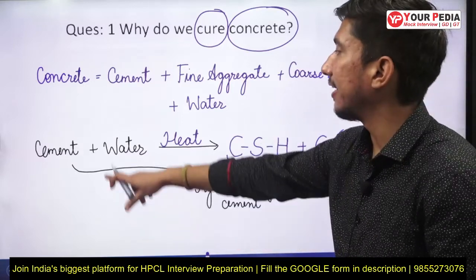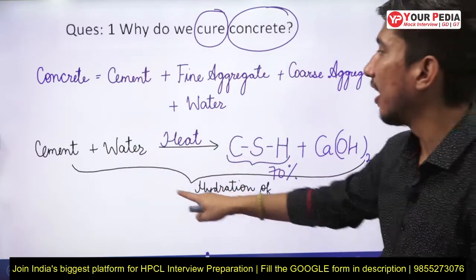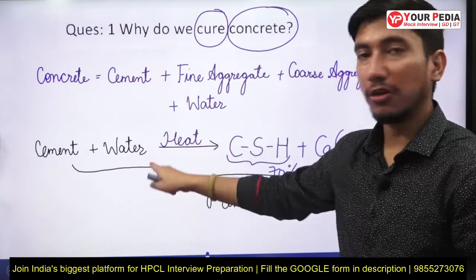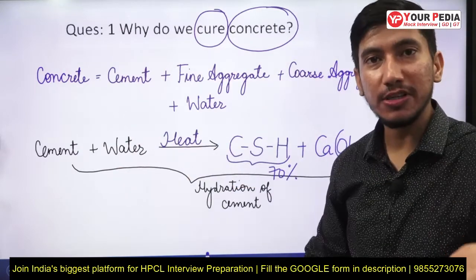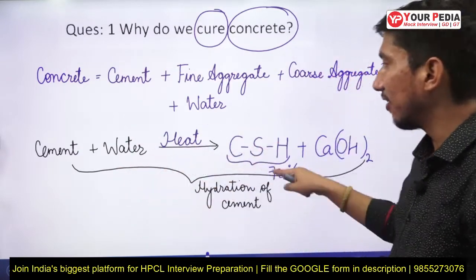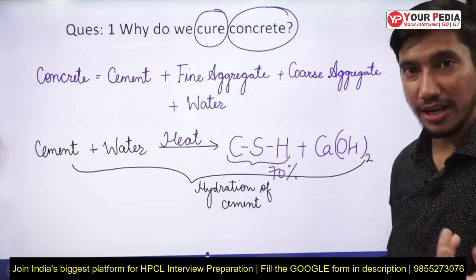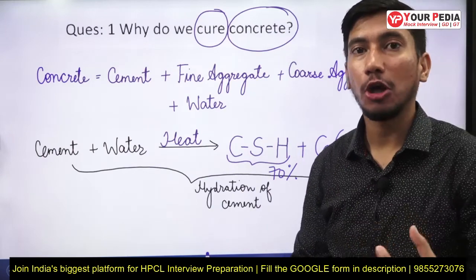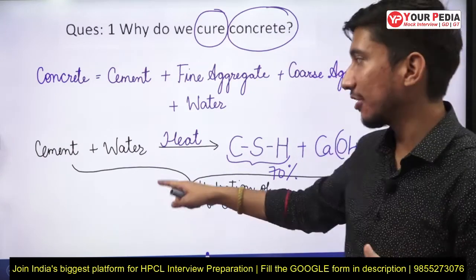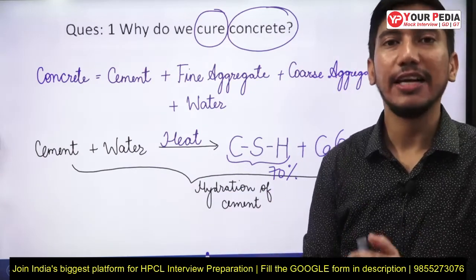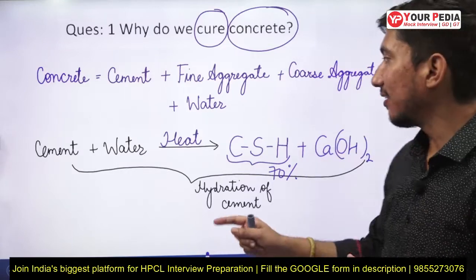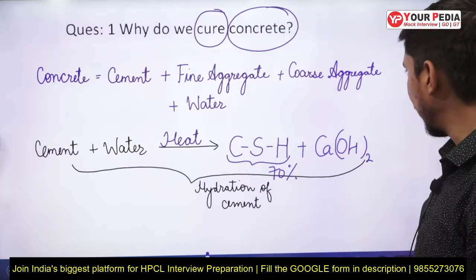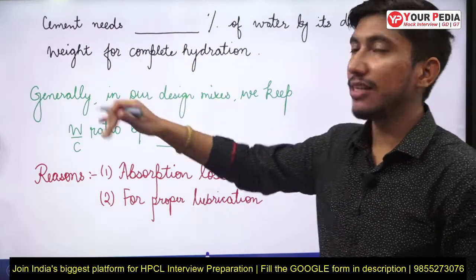From this reaction, you can see that water is very important in concrete. Sufficient water must be present so that enough CSH gel can develop and the strength can develop fully. If water is not present in sufficient amount, hydration will not be complete and the strength will be compromised.